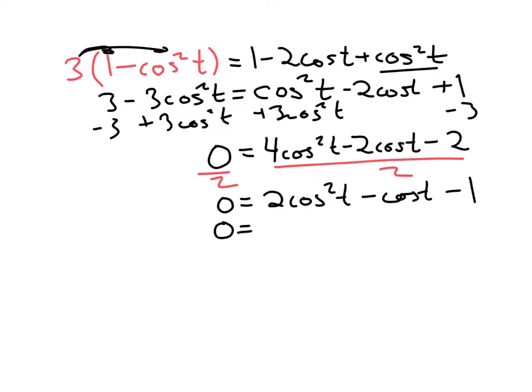And that can be factored. The only way to factor 2 times this quantity squared is 2 times 1. The only way to factor -1 with integers would be -1 times 1. I want the outside inside part to give me -cos(t). So I want to put the -1 here, so that 2 times the outside part will give me -2. Inside part gives me positive 1, and that will add up to this -cos(t).